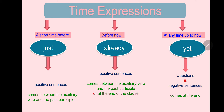'Just' comes after has/have in the affirmative sentence. 'Already' comes after has/have or at the end of the sentence in affirmative. 'Yet' comes in questions or negatives, at the end of the sentence or question.